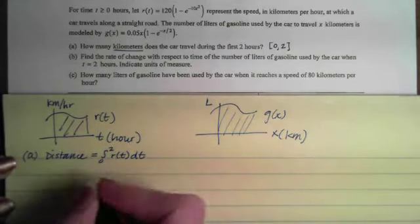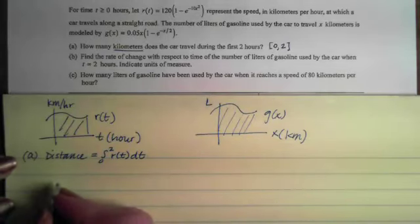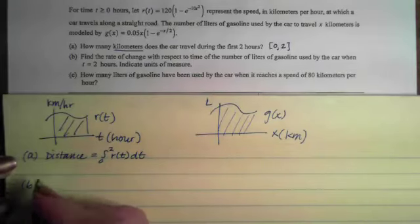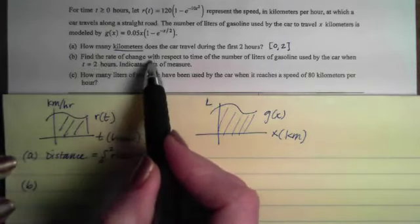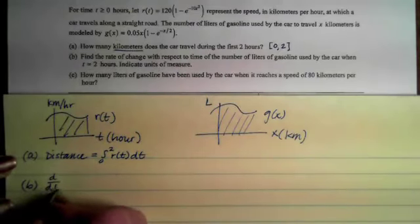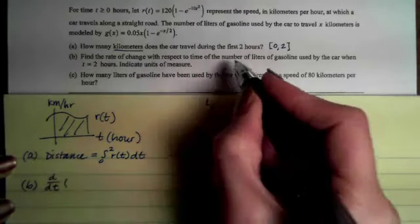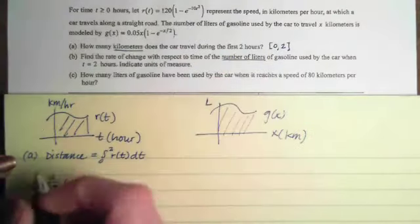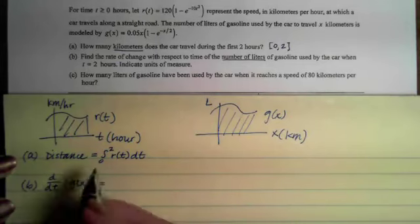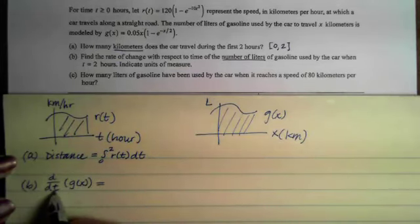If we look at part B, it says find the rate of change with respect to time of the number of liters. So on this one, we're looking for these words: find the rate of change with respect to time means I'm going to take the derivative with respect to time of the number of liters. Well, that's our g(x). Now, what's going to be a little tricky on this one is that x is not t.